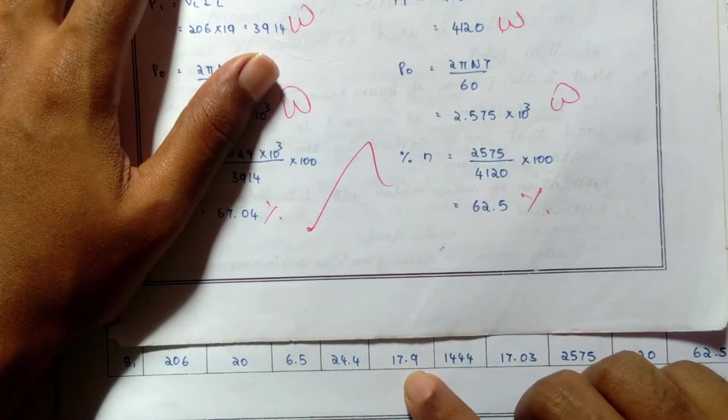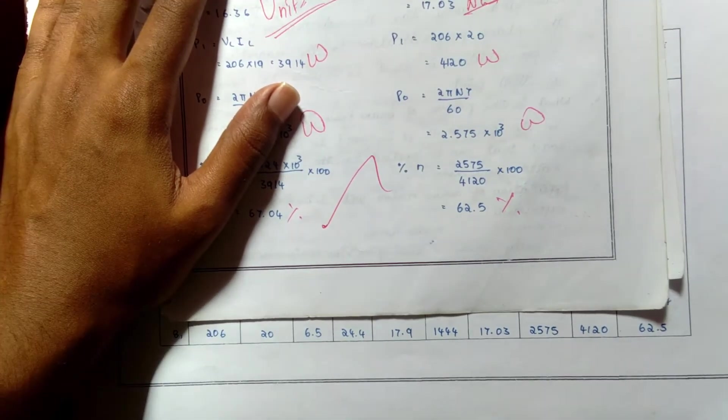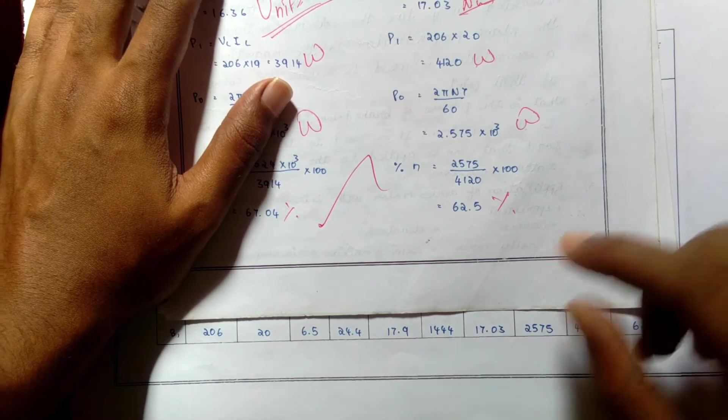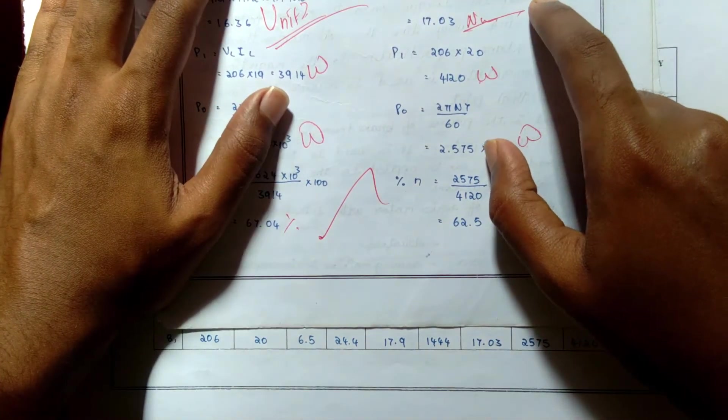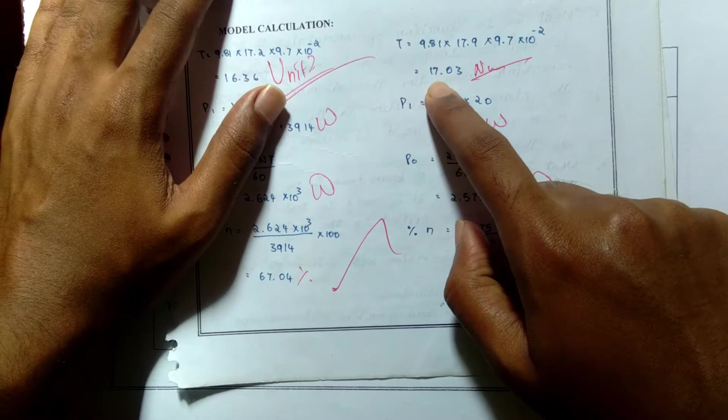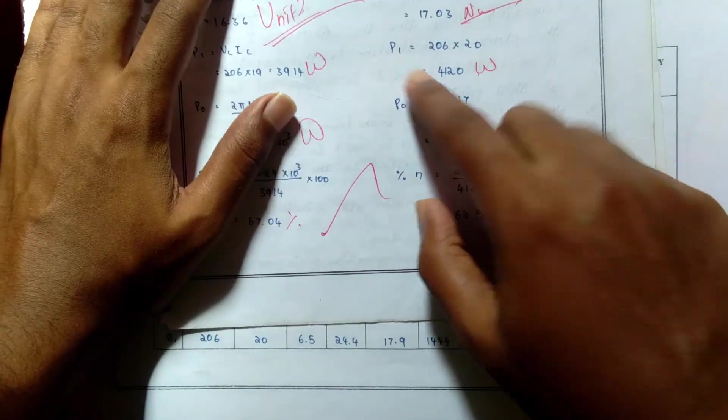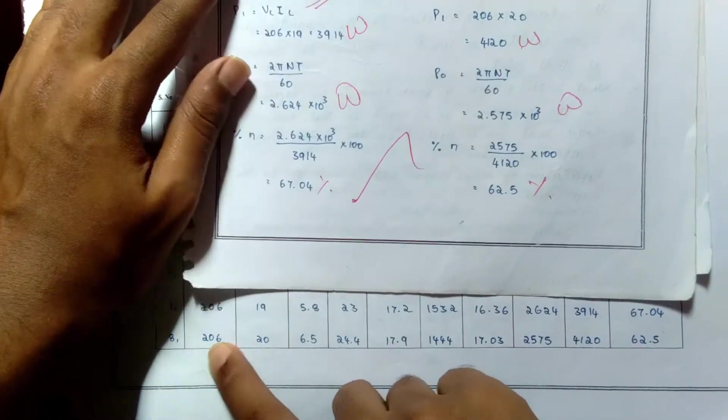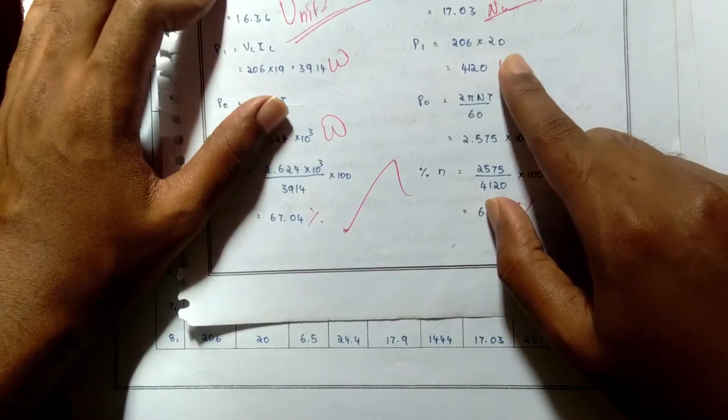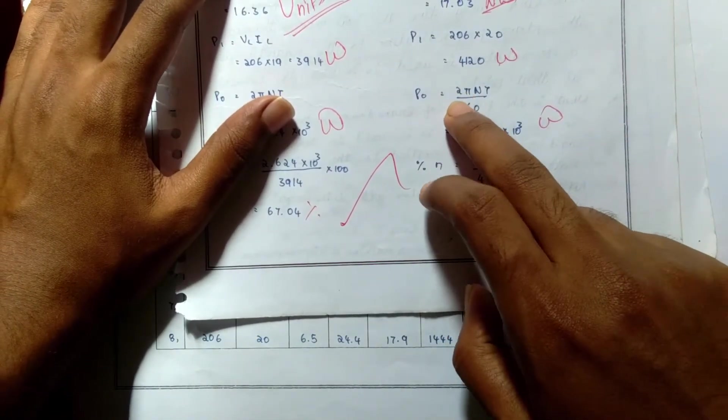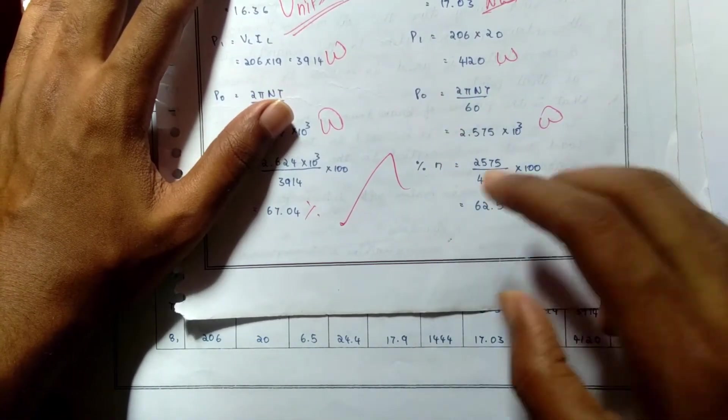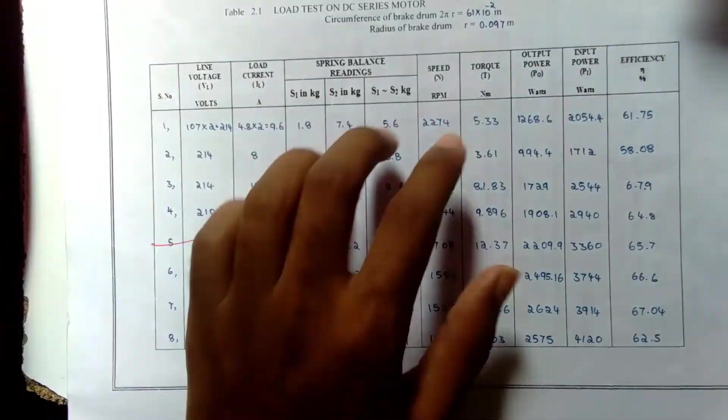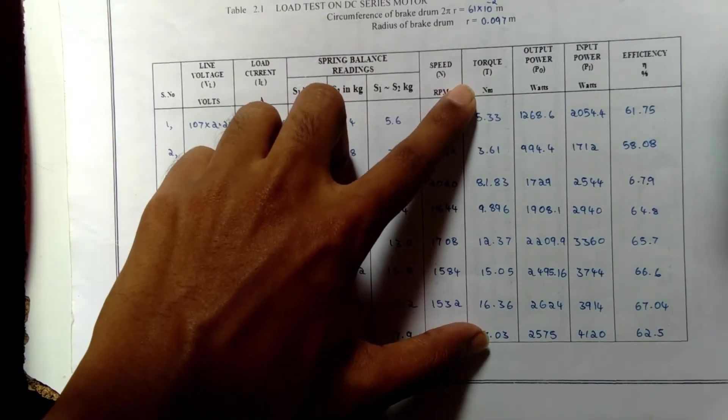And then P1 is equal to 206 times 20. And then P0 is equal to 2πNT divided by 60. N is the speed and T is the torque, 17.03. The percentage efficiency is output power by input power times 100.